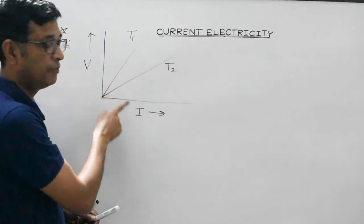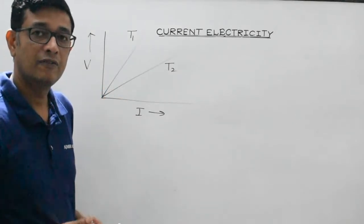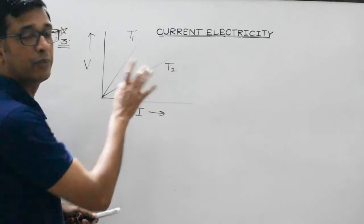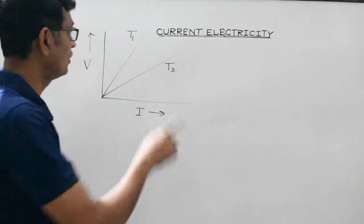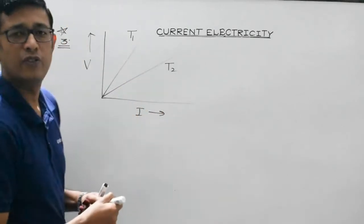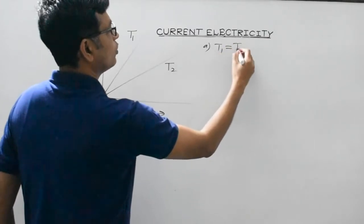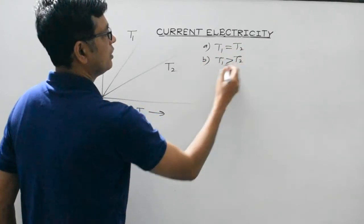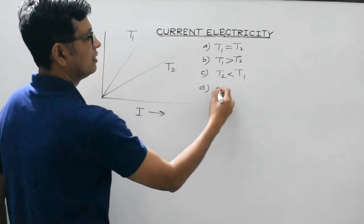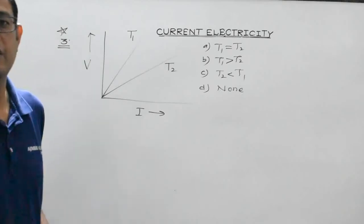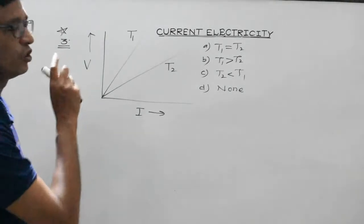The graph between potential difference and current is plotted for a conductor at two different temperatures T1 and T2. We are supposed to find the relationship between T1 and T2. Option A: T1 = T2. Option B: T1 > T2. Option C: T2 > T1. Option D: none of the above. It is a very good question.